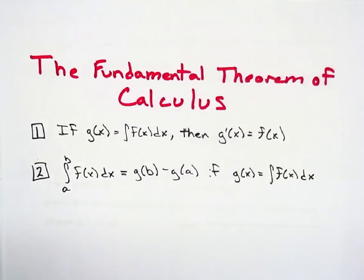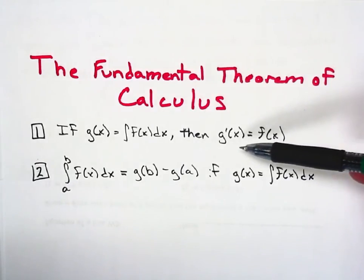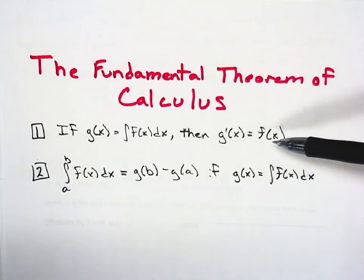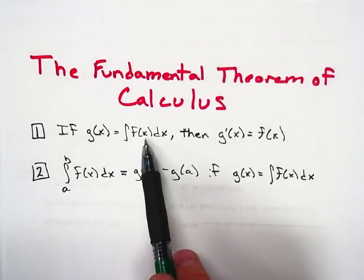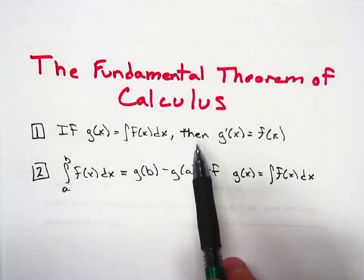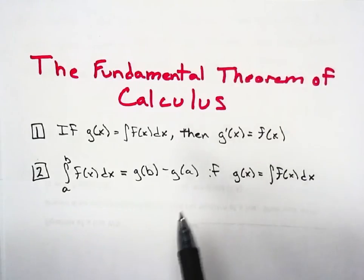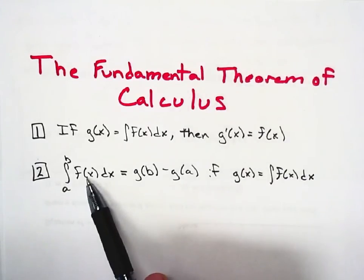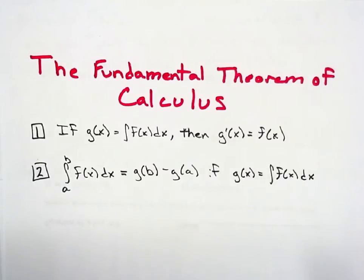Hopefully you recall the two main parts of the Fundamental Theorem of Calculus. The first is the indefinite integral part, where g prime of x is equal to f of x — that's true if g of x is the integral of f. We use that with our definite integral, where we find the antiderivative and plug in our limits of integration in the correct order.